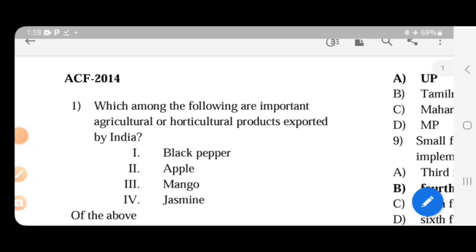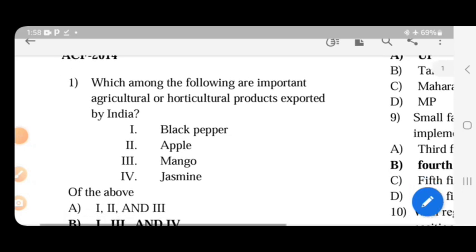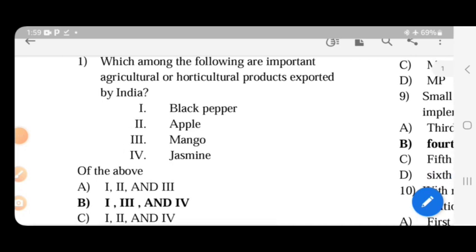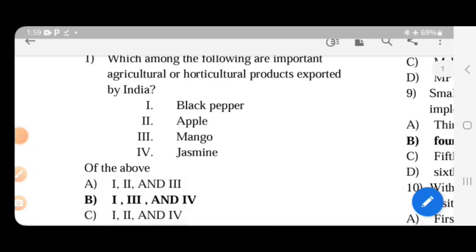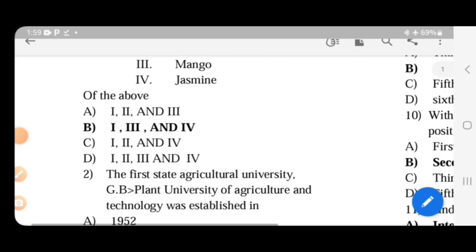We are going to revise questions from 2012 and then move on to 2014. First question: Which among the following are important agricultural or horticultural products exported by India? The options are black pepper, apple, mango, and jasmine. These three products are exported from India.